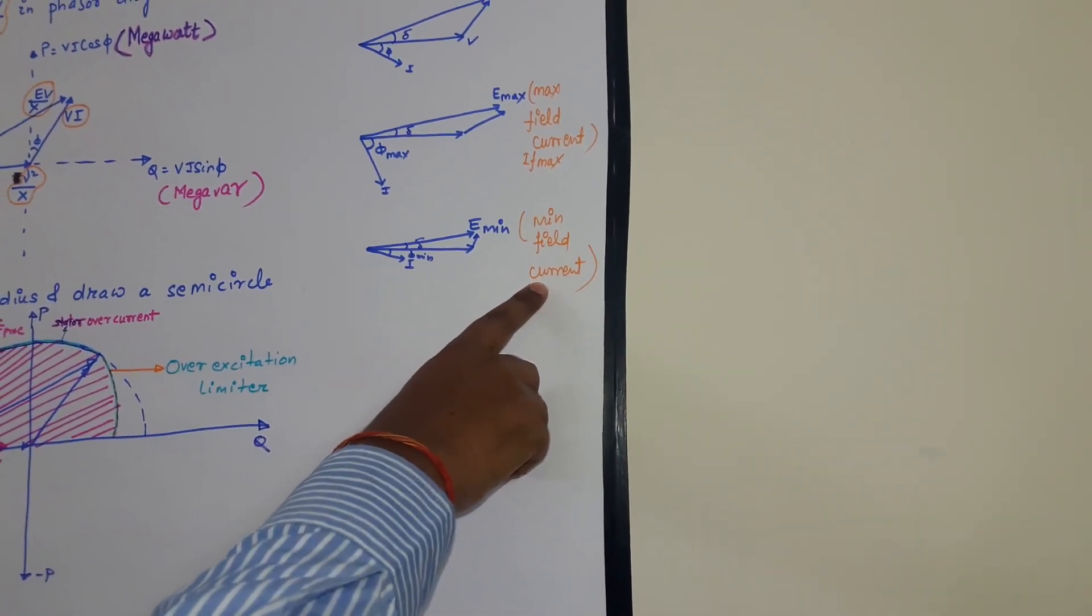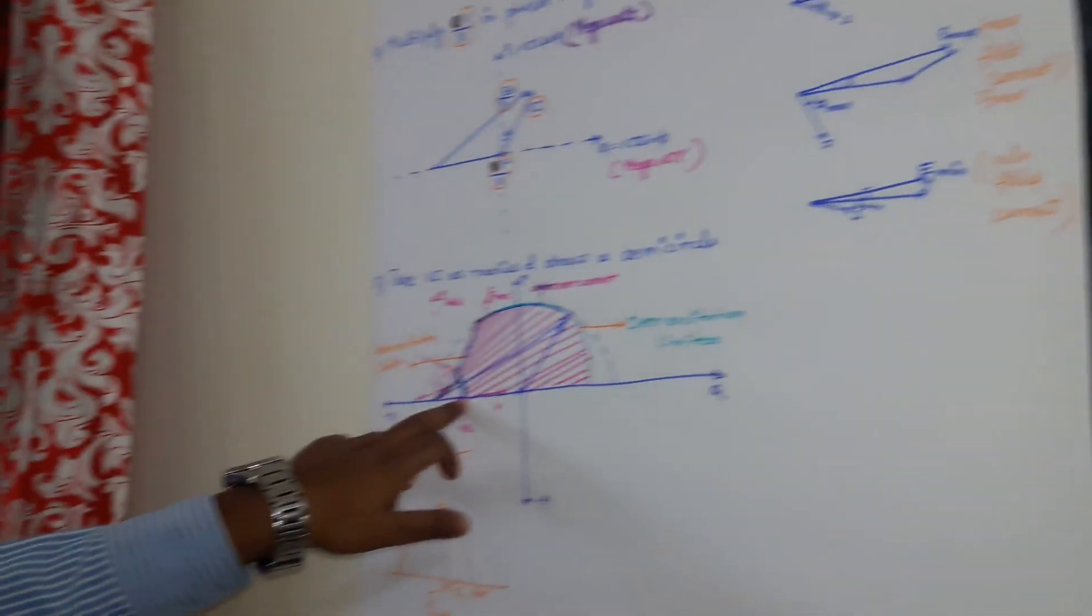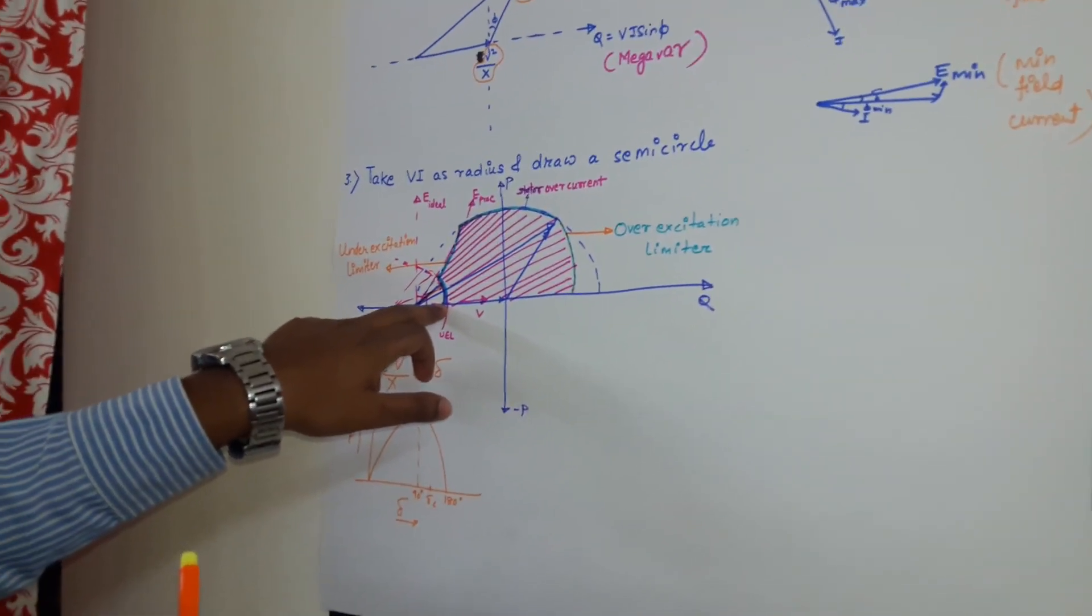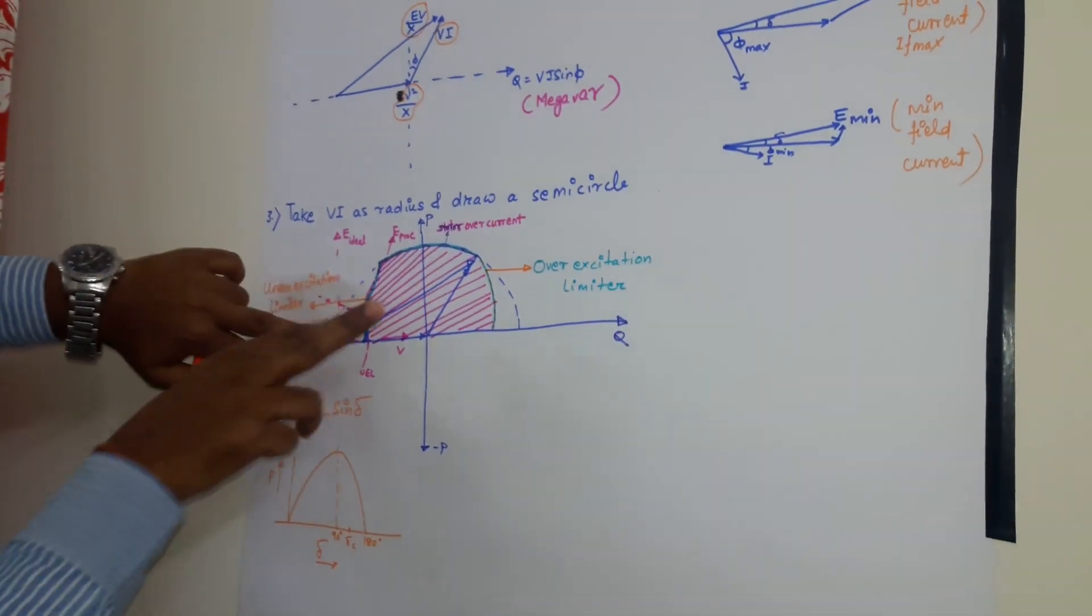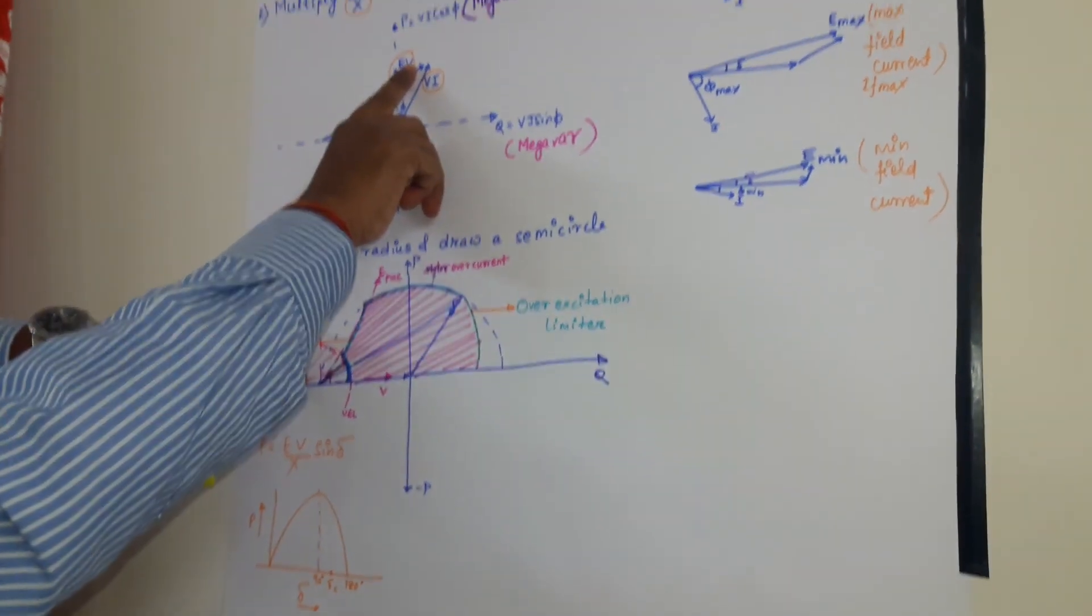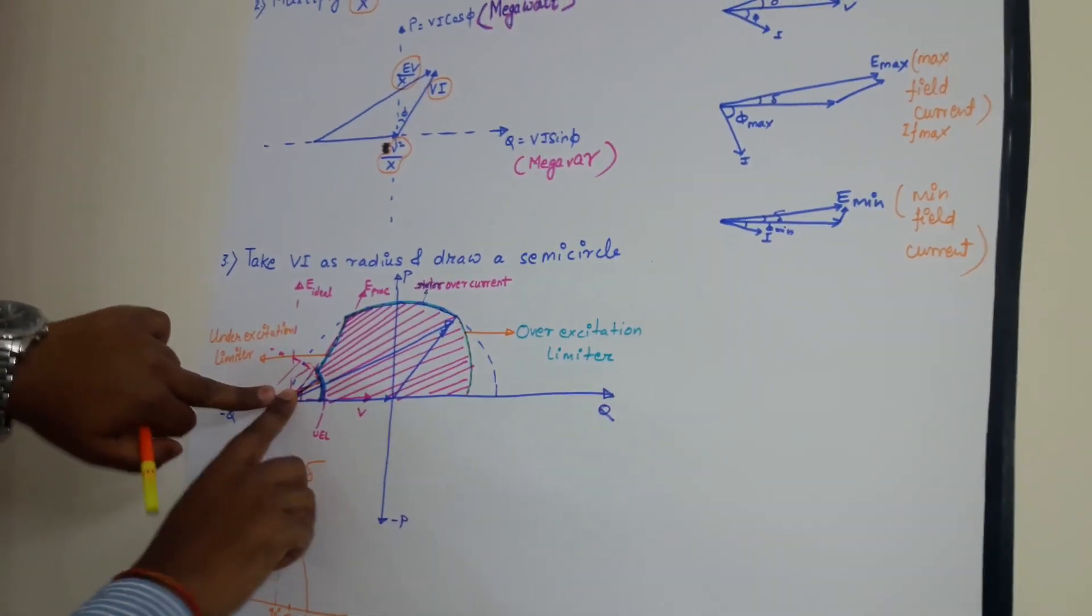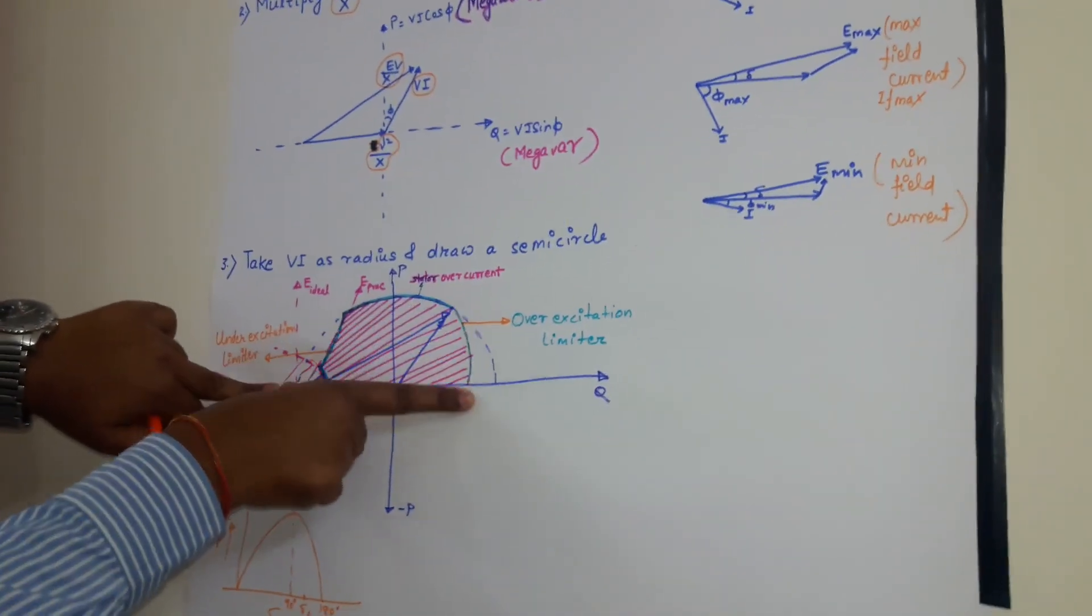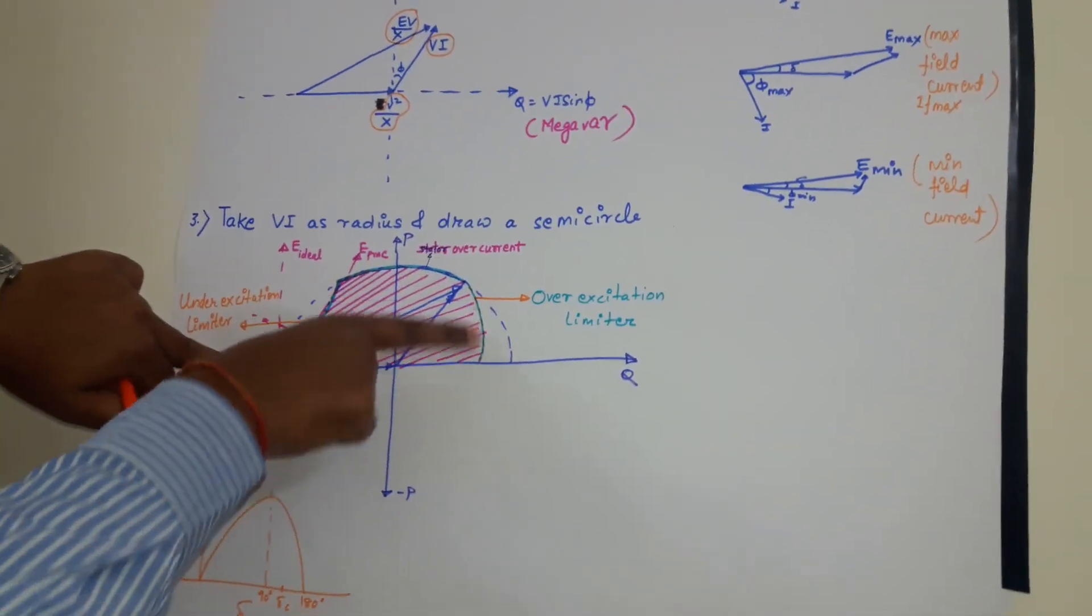At minimum field current, what is happening? We are absorbing reactive power. So at that time also, there are certain regions of generator where overheating may occur.